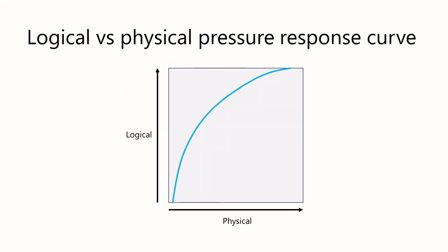This chart gives you an overall sense of that relationship. This kind of chart is called a pressure response curve. It is telling you how a system responds to a certain kind of stimulus. In this case, the stimulus is the physical pressure and the response is the logical pressure. The horizontal x-axis represents the physical pressure. The vertical y-axis represents the logical pressure.